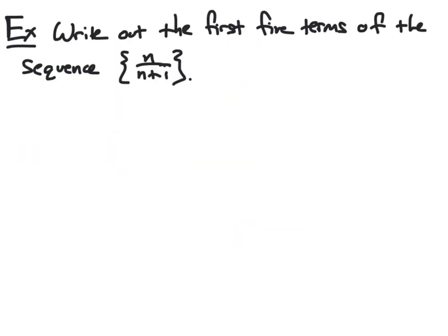In this example, we want to write out the first five terms of the sequence with the general term n over n plus 1. So this notation indicates that the nth term of our sequence will be n divided by n plus 1. And so if we want to find the first five terms of our sequence, we simply will replace n with 1, 2, 3, 4, and 5 respectively, and evaluate this given formula. So when we do this for n equal 1, we get a1 equals 1 over 1 plus 1, which is 2. So a1 will be 1 half.